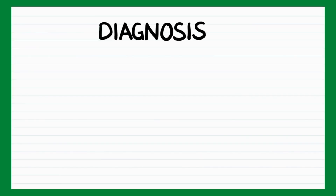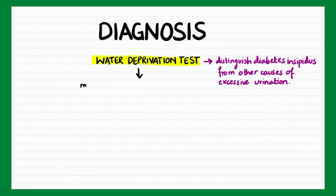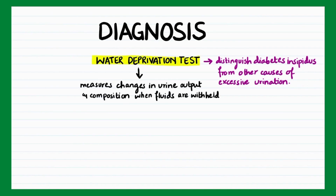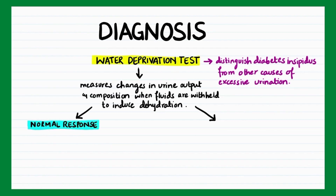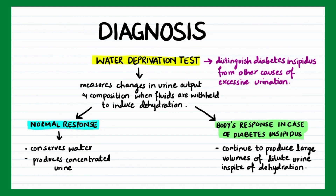To diagnose diabetes insipidus, in addition to measuring serum electrolytes and glucose, the water deprivation test is used, which helps distinguish diabetes insipidus from other causes of excessive urination. This test measures changes in urine output and composition when fluids are withheld to induce dehydration. The body's normal response is to conserve water and produce concentrated urine, but in diabetes insipidus, the body continues to produce large volumes of dilute urine despite dehydration.